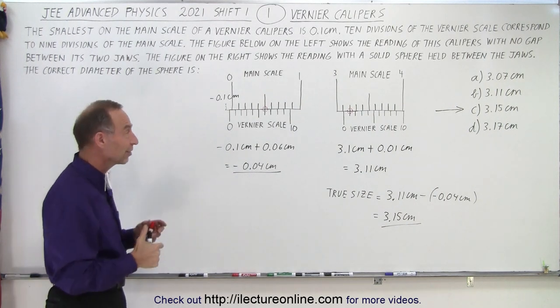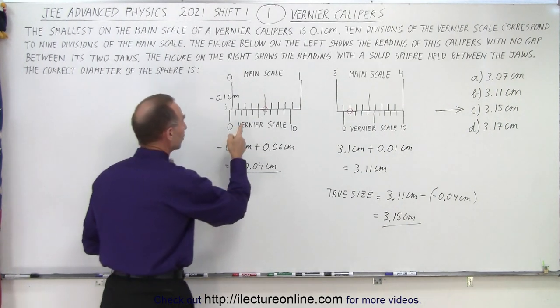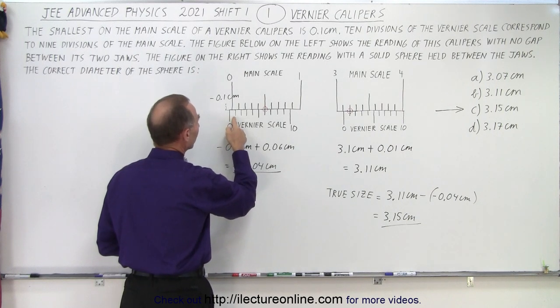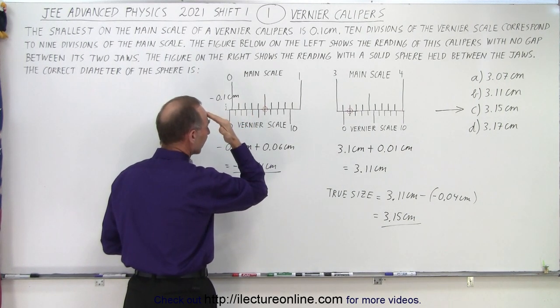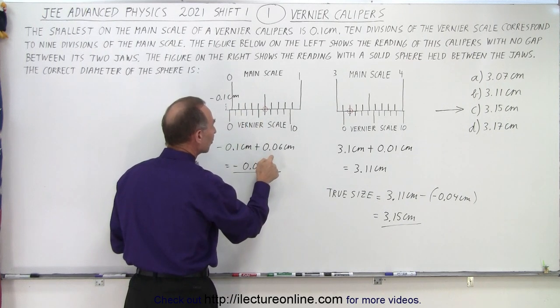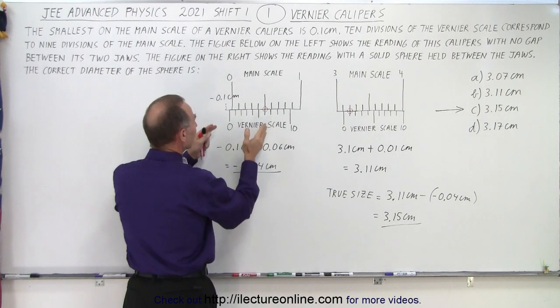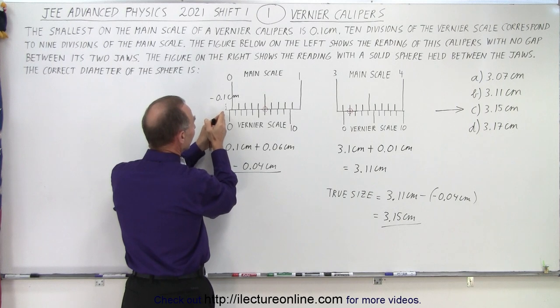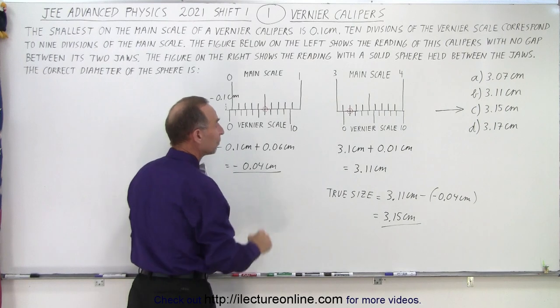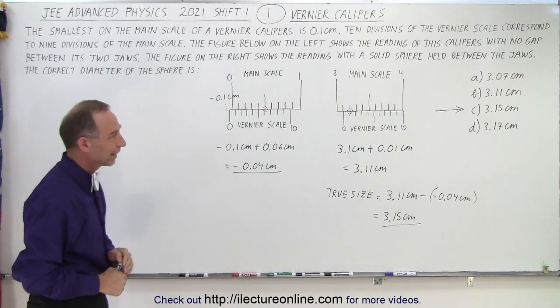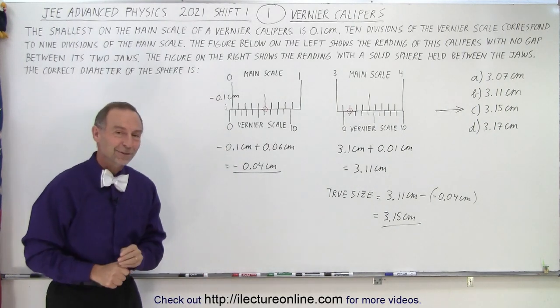You have to be careful because it's tempting to start counting from the left and go 1, 2, 3, 4, 5, 6 lines and so we think of that maybe as minus 0.06, but actually you have to think about that starting from the negative 0.1 and adding to that a positive 0.06 to get a negative 0.04 reading, and that is how it's done.